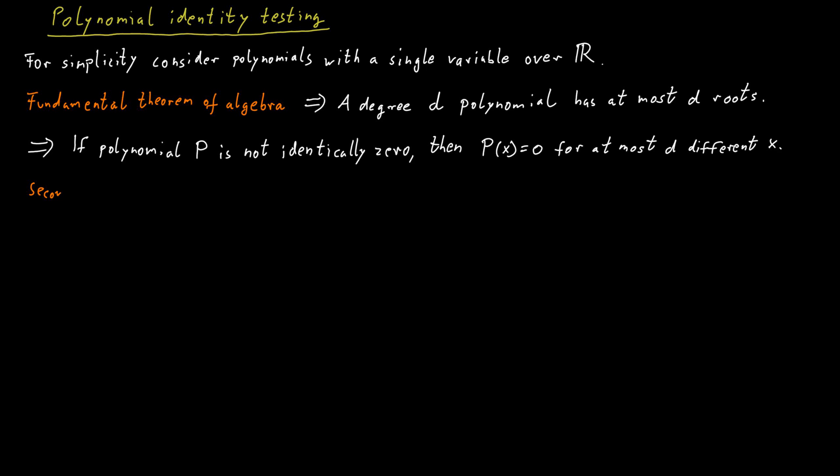So one idea we could have is we simply test whether the polynomial is equal to 0 in d+1 many different locations. And if it is 0 in all of those locations, we know that the polynomial has to be 0 everywhere.